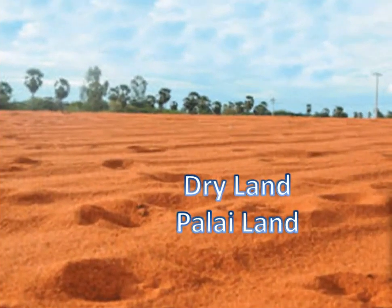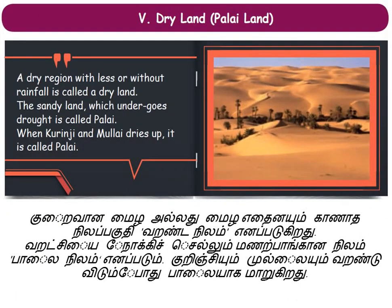Now we will see the dry land area of the Sangam age, called Palai land. This landform is not a permanent feature — when the Kuringi and Mullai landforms dried up, it was called Palai land. It is very dry, rainfall is very less, the land becomes very sandy, and it has drought. A dry region with less or no rainfall is called dry land. The sandy land which undergoes drought is called Palai.